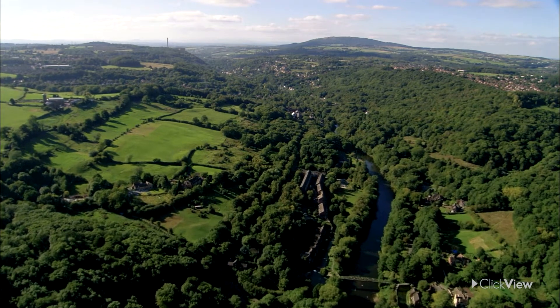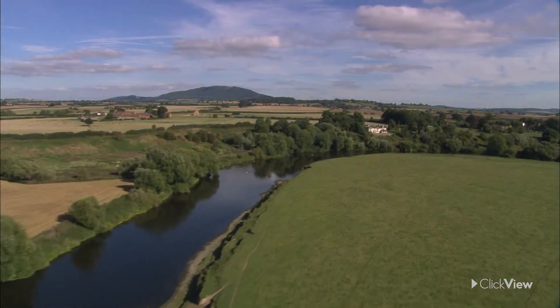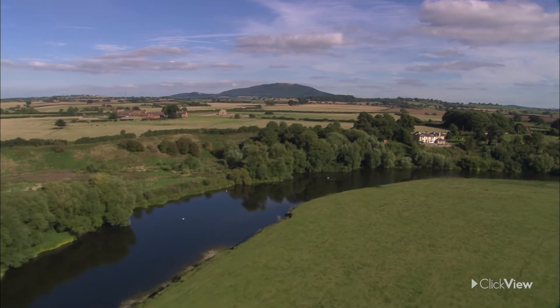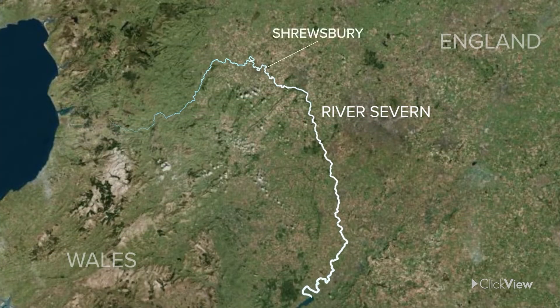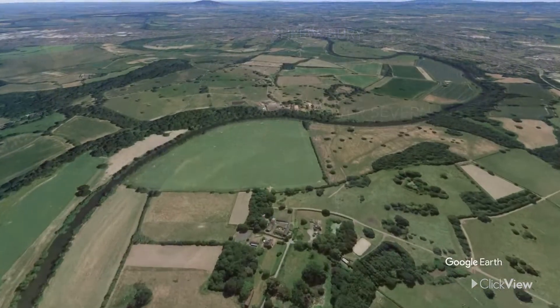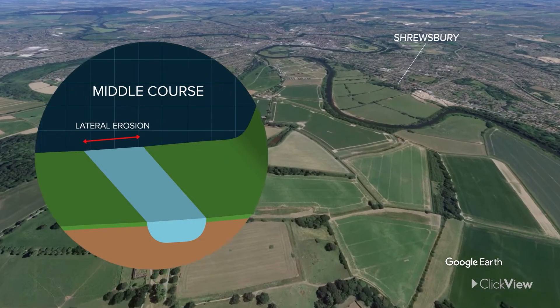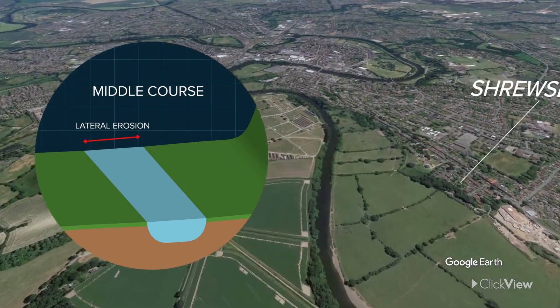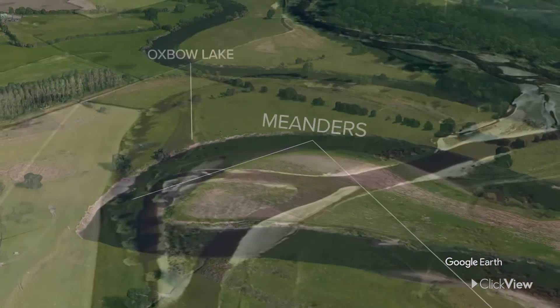Leaving the river's upper course, the landscape becomes less rugged and mountainous. By the river's middle course, the volume of water has increased, the river is wider, and the land tends to become flatter. The middle course of the River Severn starts around Shrewsbury. In the middle and lower courses, the process of lateral erosion rather than vertical erosion is dominant, forming wide, deep valleys with gently sloping sides, as well as meanders and, through flooding, oxbow lakes.